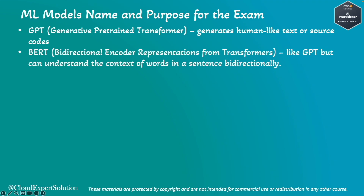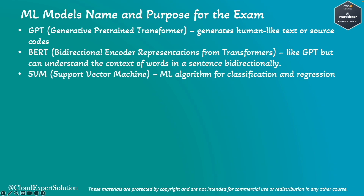Next is Google BERT — Bidirectional Encoder Representations from Transformers. Like GPT, it can understand the context of words in a sentence bi-directionally, and it can be used in language translation. Then there is SVM, or Support Vector Machine, a machine learning algorithm used for classification and regression.